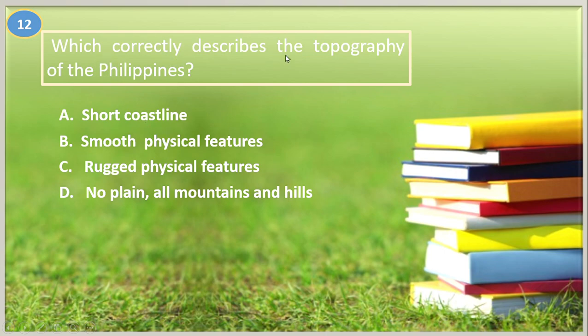Number twelve. Which correctly describes the topography of the Philippines? A. Short coastline, B. Smooth physical features, C. Rugged physical features, D. No plain — all mountains and hills. The answer is letter C, rugged physical features, which describes the topography of the Philippines.